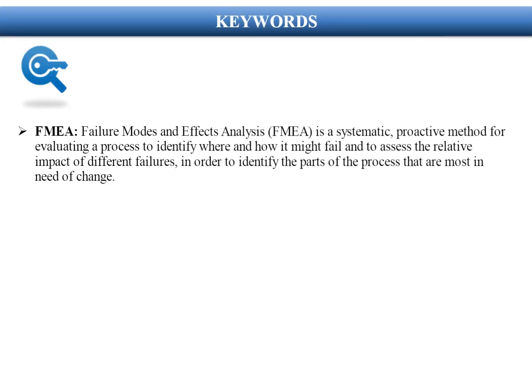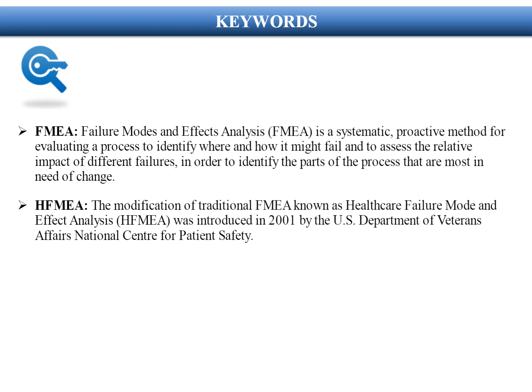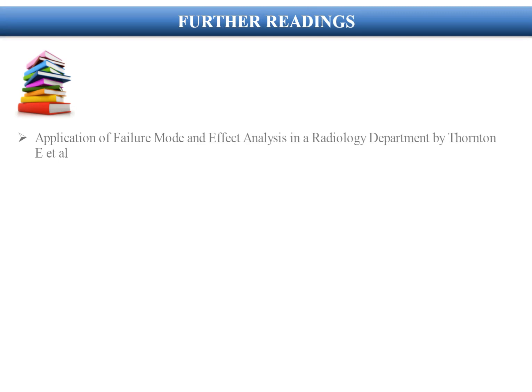Key definitions: FMEA (Failure Modes and Effects Analysis) is a systematic, proactive method for evaluating a process to identify where and how it might fail and to assess the relative impact of different failures, in order to identify the parts of the process most in need of change. HFMEA (Healthcare Failure Mode and Effect Analysis) is the modification of traditional FMEA, introduced in 2001 by the US Department of Veterans Affairs National Center for Patient Safety.